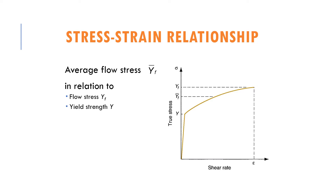Let's look at the stress-strain relationship through this graph. As you may remember from the tensile test, this is the most common stress-strain graph. When stress is applied on a certain material, it will start to achieve the yield strength Y, and then it will come to the maximum at YF. In the middle, we can classify it as the average flow stress of the process.